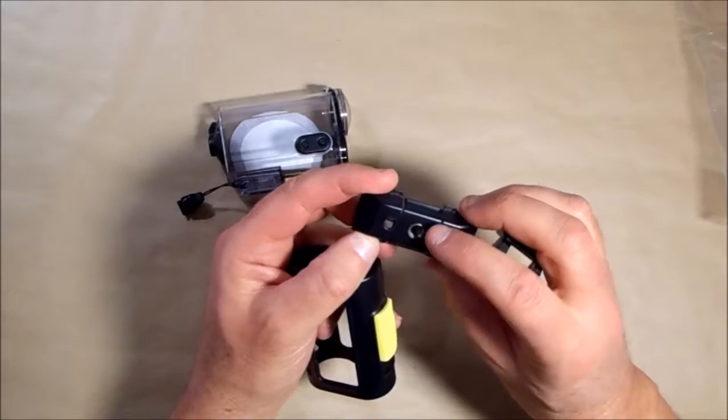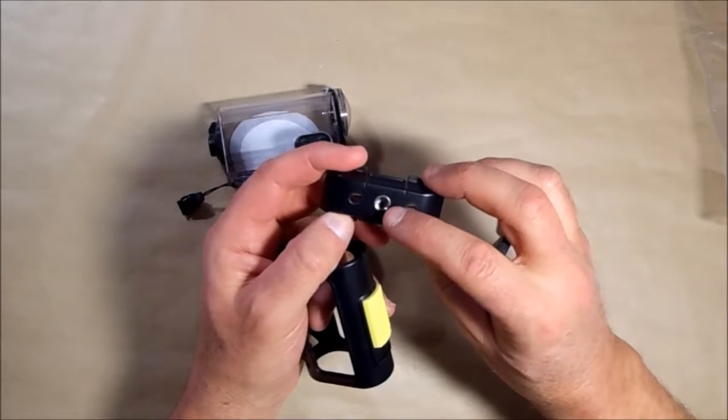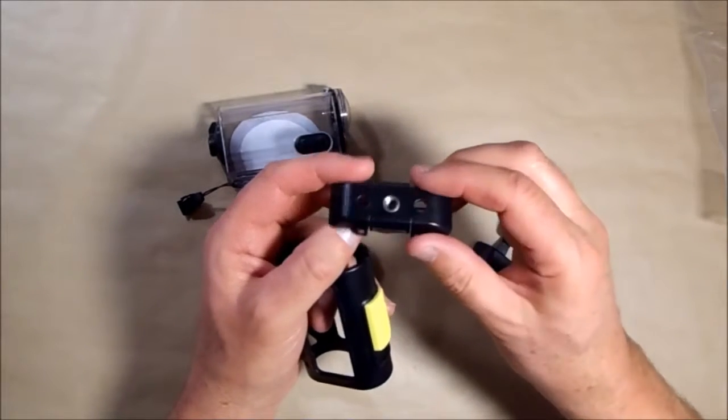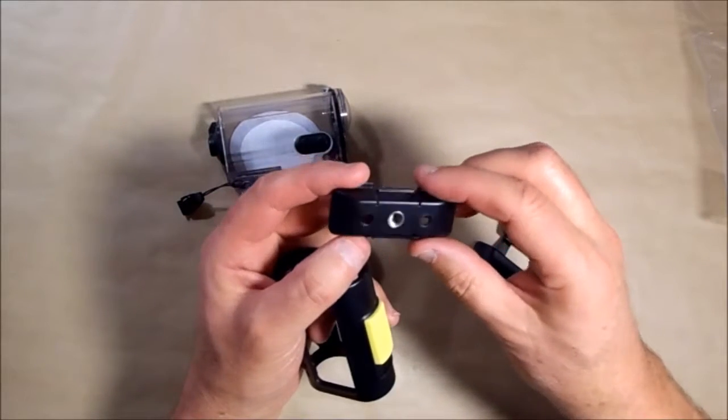You can see on this tripod mount you have a standard quarter twenty thread which helps you mount to any standard tripod. You can also mount a one inch RAM ball to there, and you'll be able to mount this thing to any of your Yak Attack or RAM products that use the screw ball type system.